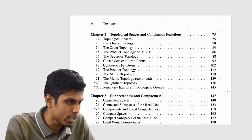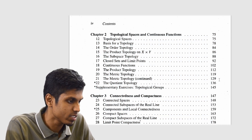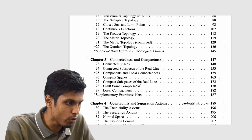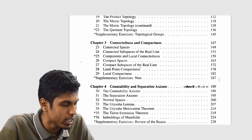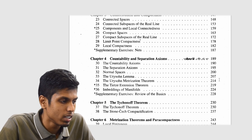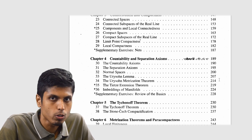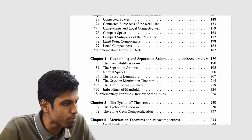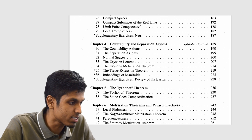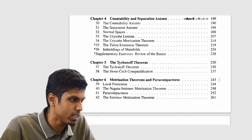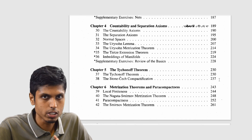Then you can go to connectedness and compactness, which is chapter 3, and move to chapter 4, which is also important. Chapter 4 discusses certain axioms and the properties of topology. You can skip the subsections marked with asterisks and go through chapters 3 and 4 continuously.